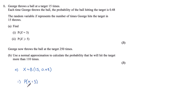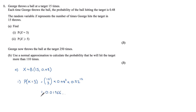When looking for the probability that X equals 3 — this precise number of hits — we use the binomial calculation. So we have 15 choose 3 times 0.48 to the power 3, times 0.52 to the power 12. On our calculator this equals 0.01966, which is 0.0197 to three significant figures.